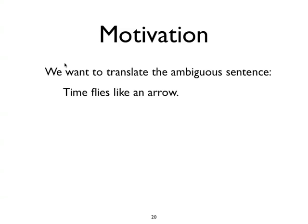Motivation. Let's say we have a slightly ambiguous English sentence, like 'time flies like an arrow.' We want to translate it into Japanese, but we are uncertain what it means. One source of information we have is looking at the grammatical categories — in other words, the parts of speech of the sentence.